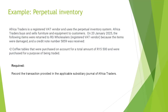Africa Traders is a registered VAT vendor and uses the perpetual inventory system. Africa Traders buys and sells furniture and equipment to customers. On 20 January 2025, the following items were returned to RG Wholesalers because the items were damaged and a credit note number 5859 was received. RG Wholesalers is a registered VAT vendor. Two coffee tables that were purchased on account for a total amount of 15,500 Rand and were purchased for the purpose of being traded are now returned. We are required to record the transaction in the applicable subsidiary journal of Africa Traders.